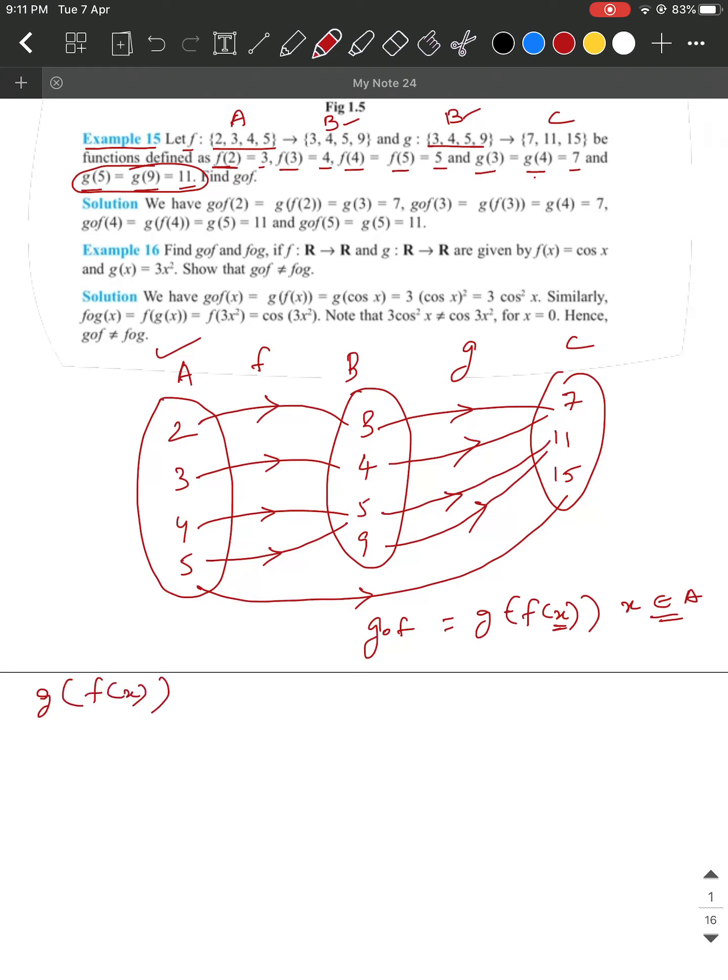For G of F of X, the first one we will find is G of F of 2. Now, check what is F of 2 according to the question. F of 2 is given as 3. This will be G of, in the place of F of 2, replace it with 3. What is G of 3? G of 3 is given as 7.